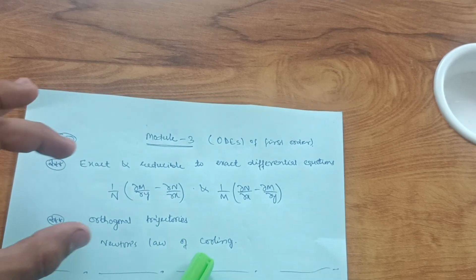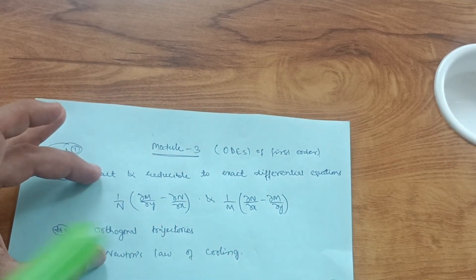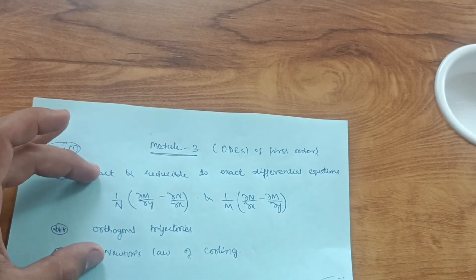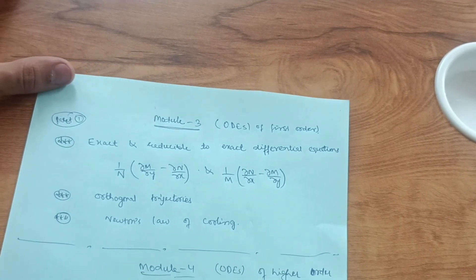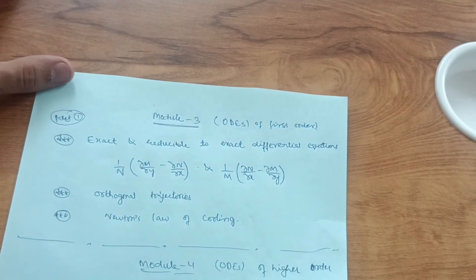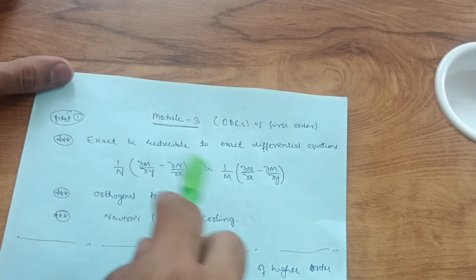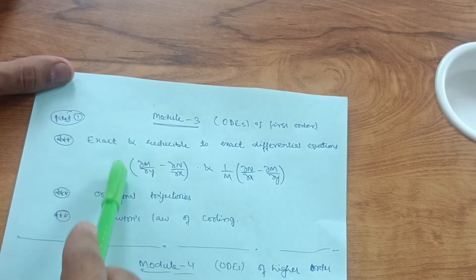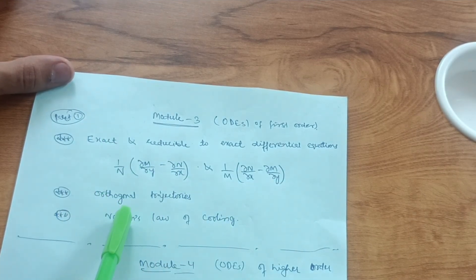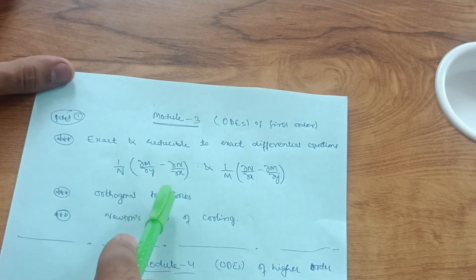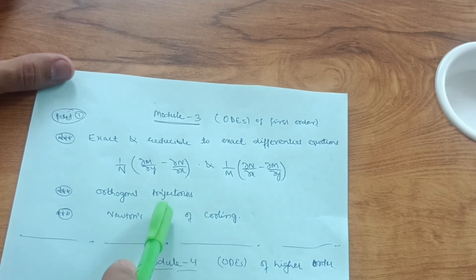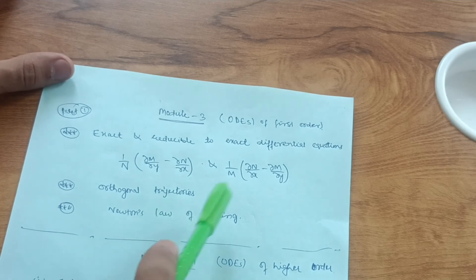The other topics to cover in Module 3 are orthogonal trajectories and Newton's law of cooling. These are the three topics you must cover in Module 3 — no need to go to other parts despite the vast syllabus in first-order ODEs. Try three to four problems from each of these three varieties and you will easily grab marks in this module.